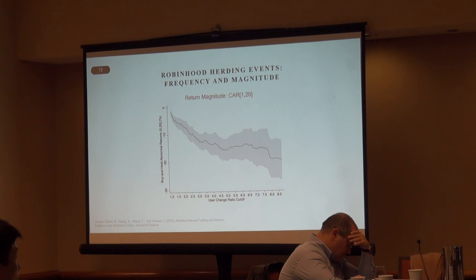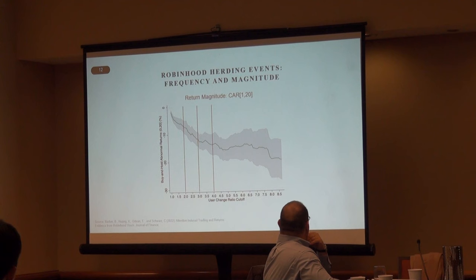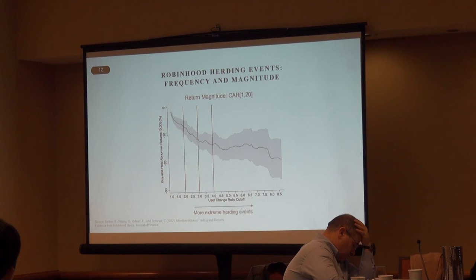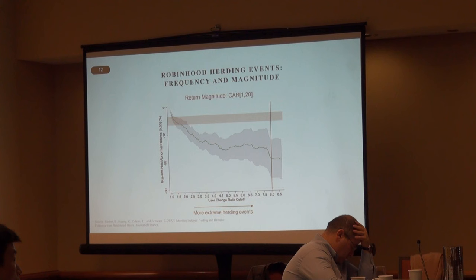If we use the Robinhood user change ratio as a cutoff to define herding events and look at cumulative abnormal returns post-event, we see that when net buying by Robinhood investors doubles, triples, or quadruples, the cumulative abnormal return becomes larger and larger in magnitude. For the most extreme events, the 20-day cumulative abnormal return can reach negative 20%. Comparable events in the existing literature only show returns in a much smaller range — so the return effects of these Robinhood herding events are enormous compared to what's documented in the literature.